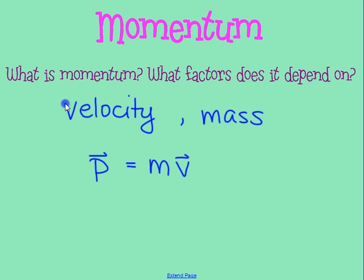You'll notice that vector symbols are used here. Momentum is a vector, so we do need to pay attention to direction. However, it has the same direction as velocity, since mass is a positive scalar — it can't change the direction at all.